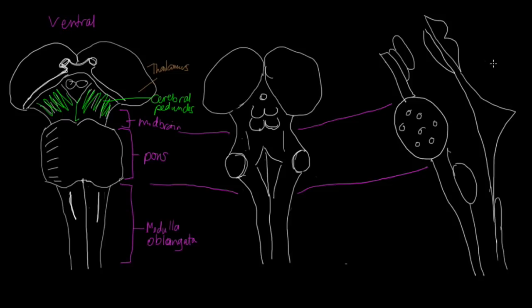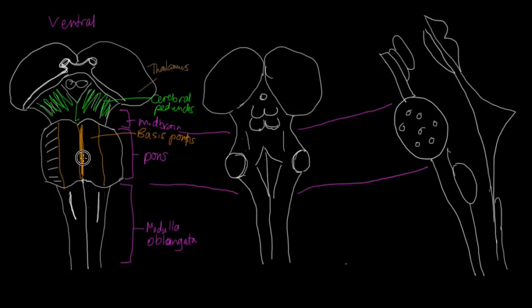On the ventral surface we can also see the pons. The ventral region inside this rectangle is called the basis pontis, which is just a fancy name for the base of the pons. In the middle of that there's a groove known as the basilar groove, and the basilar groove is where we find the basilar artery that supplies this particular region of the brainstem.